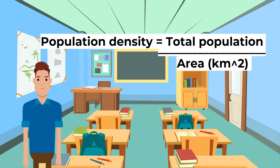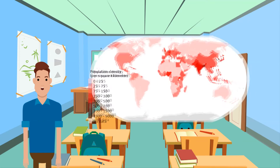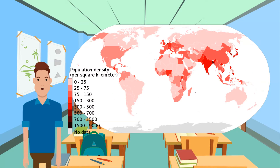Population density is the number of people per unit area. It is calculated by dividing the total population by the area. The average population density of the world is low. The global pattern of population density is very uneven — around 20% of the world's population lives in less than 10% of the land.